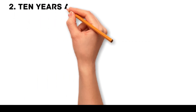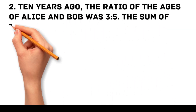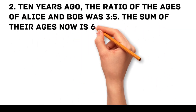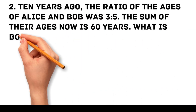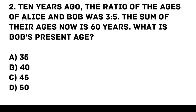Problem 2. Ten years ago, the ratio of the ages of Alice and Bob was 3 to 5. The sum of their ages now is 60 years. What is Bob's present age? a. 35, b. 40, c. 45, d. 50.